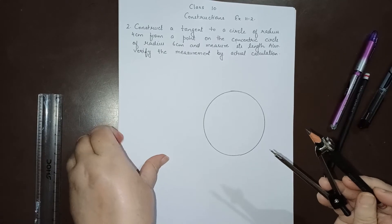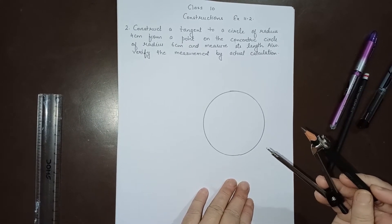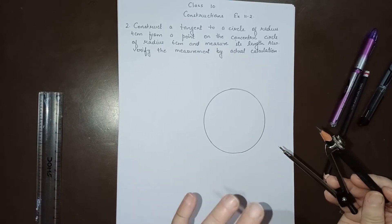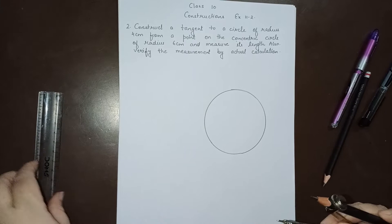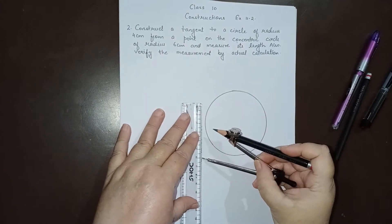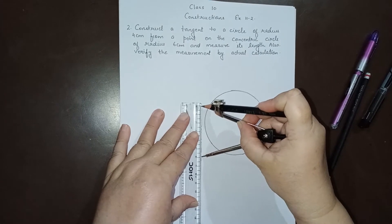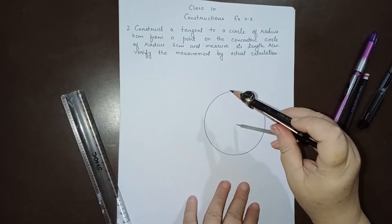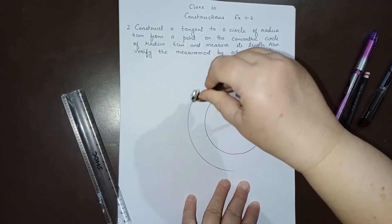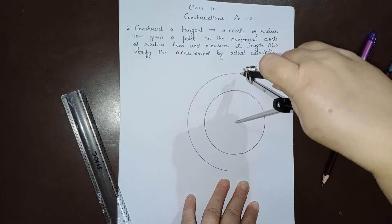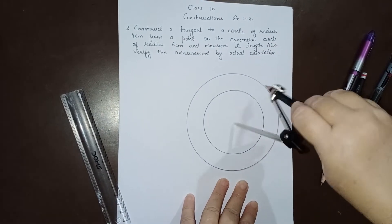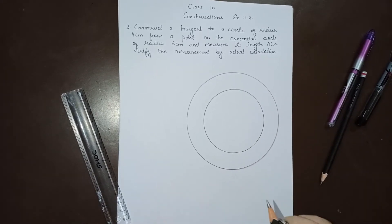Concentric circles means circles having the same center. From this same center, you have to draw another circle whose radius is 6 centimeters. So we will draw a circle with radius 6 centimeters. This is a circle of radius 6 centimeters.